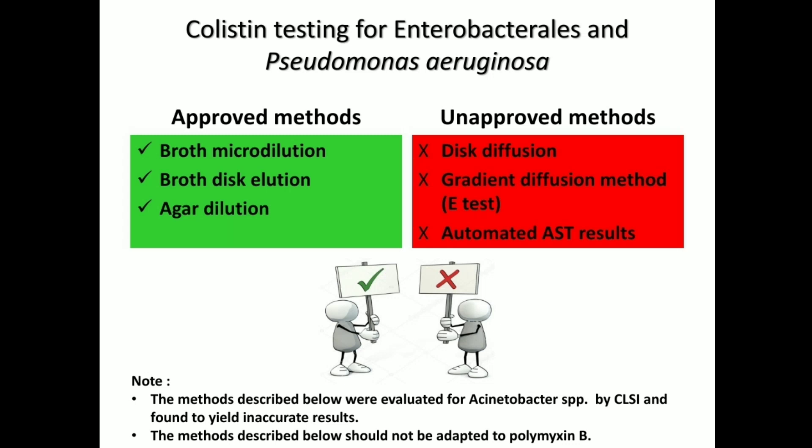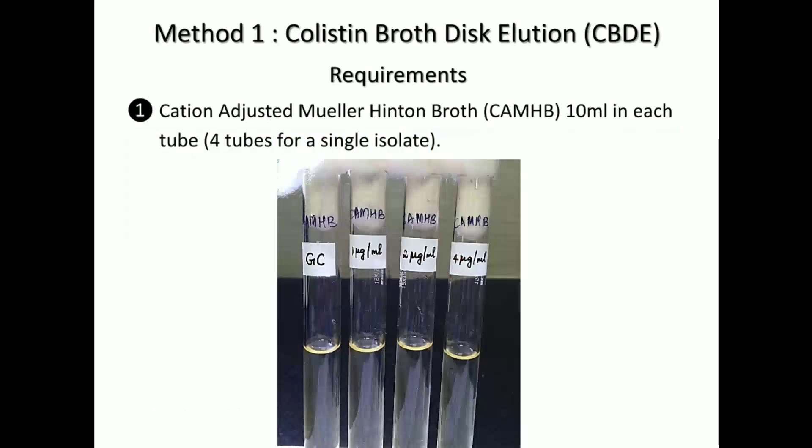The first method we will be discussing is the broth disc elution test. You need 3 requirements. The first requirement is a cation adjusted Muller Hinton broth — 10 ml taken in 4 tubes labeled as tube 1, 2, 3, and 4.